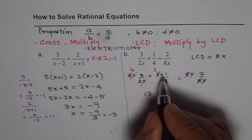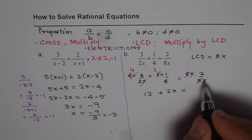So what you are left with is 4 times 3 is 12, plus 2x equals 2.